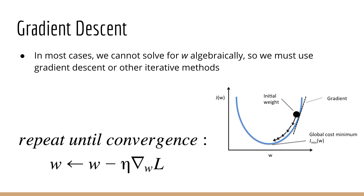Of course, in most cases it's not possible to solve for w algebraically, so we have to use a method called gradient descent. This involves finding the gradient of L with respect to w and then taking small steps in that direction over and over again until the loss L converges to its minimum value. We call eta the learning rate, and it defines the step size for each iteration of gradient descent. If you're not convinced that this procedure works, you can check out my gradient descent tutorial to try it out for yourself. But ideally, you already know how this works for linear regression and logistic regression, so it should not be a problem conceptually.